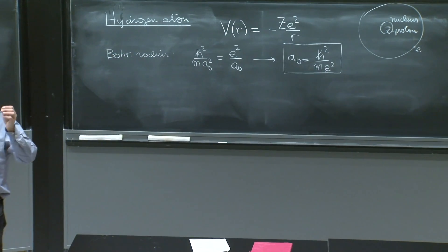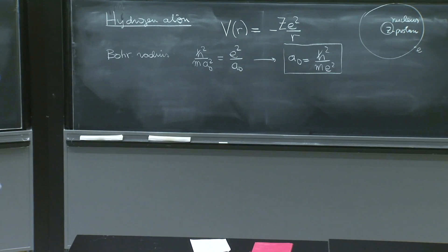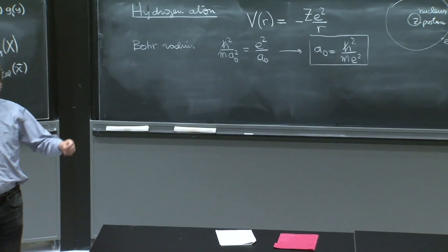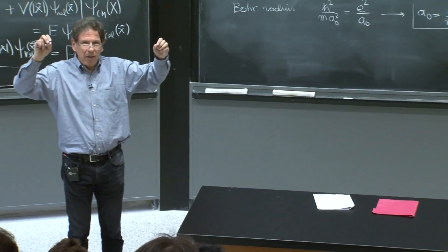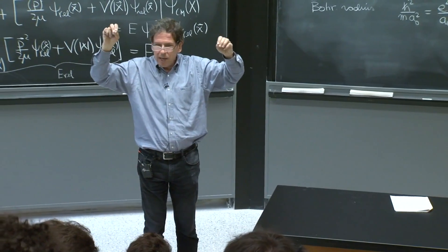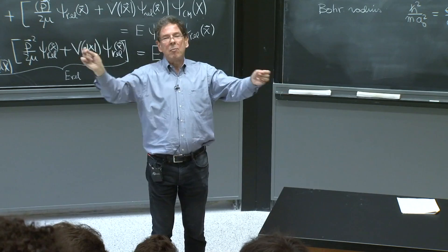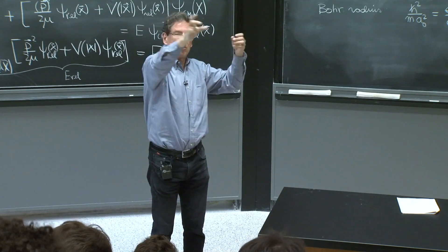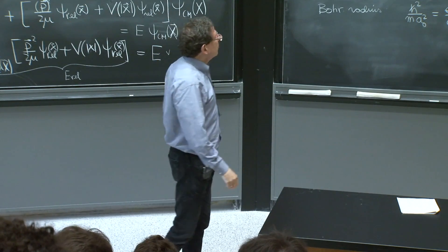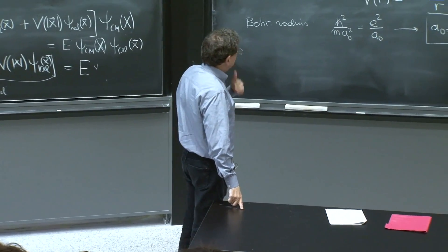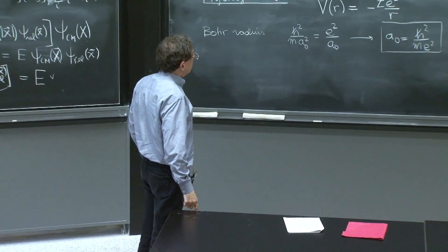Intuitively, one thing that you should remember, e is appearing in the right place. And you could imagine if the strength of electricity was weaker and weaker, like setting e going to 0, the atom would become bigger and bigger. It would just not be able to hold it. So it's reasonable to expect this to happen.